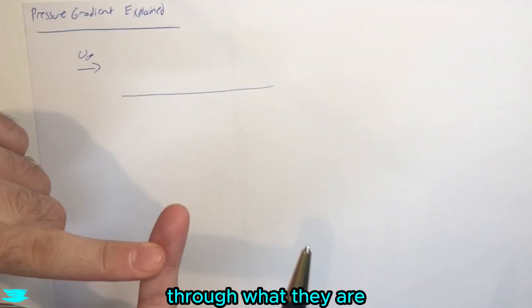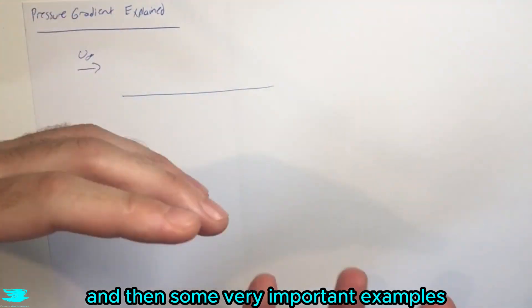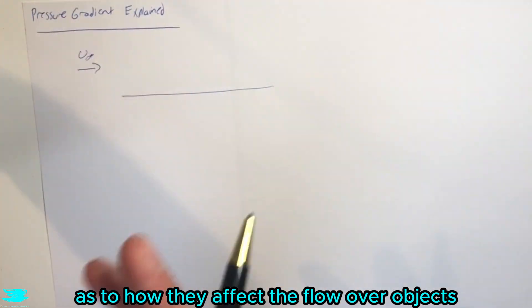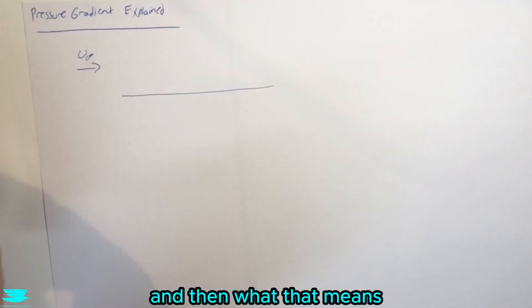In this video we're going through what they are and then some very important examples as to how they affect the flow over objects and what that means.